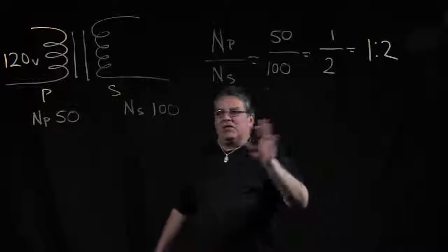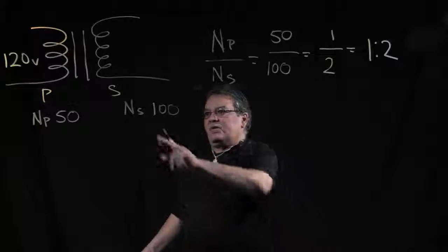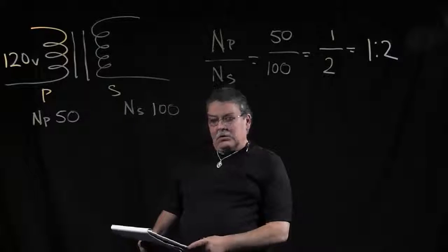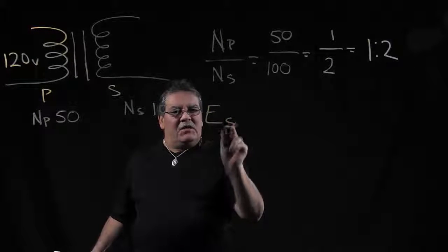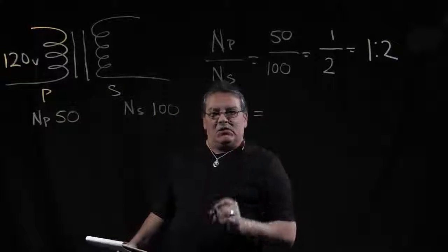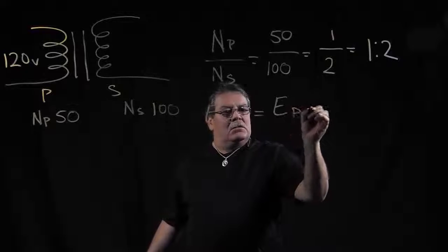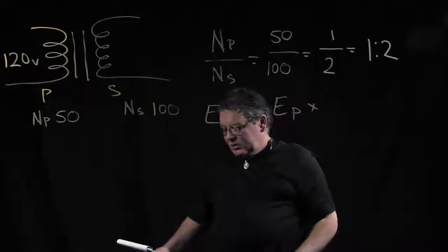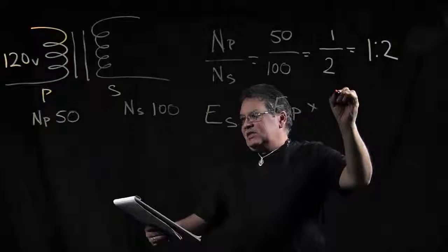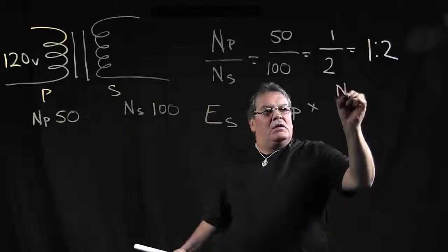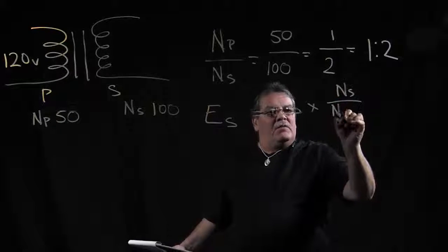Okay, so then once we have our turns ratio, now we can calculate for our secondary voltage. So the formula for your voltage in the secondary, Es, is equal to your primary voltage times your turns. So we have our number of turns in the secondary of 100, number of turns in the primary of 50.